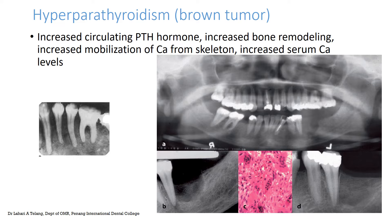Let's look at some examples starting with hyperparathyroidism. The bone lesion in hyperparathyroidism is called a brown tumor. It is not named after anyone — it is simply because of the brownish appearance of the bone. There is increased circulating parathyroid hormone, increased bone remodeling, increased mobilization of calcium from the skeleton, and increased serum calcium levels. Hence, there are radiolucent lesions within the jaw, with excessive radiolucency and a radiolucent defect-like appearance within the bone.